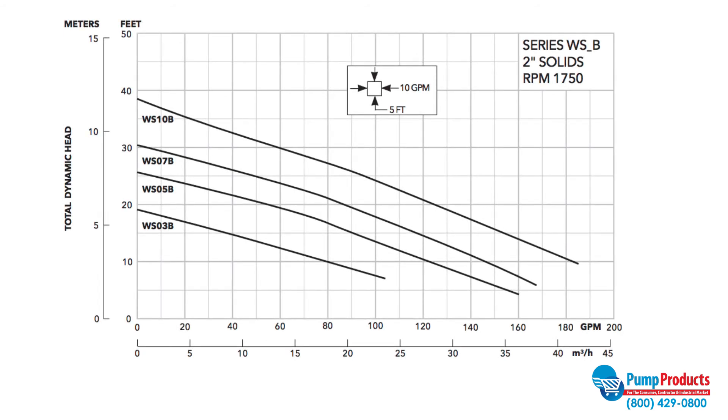For example, on this chart, the WS03B model will produce a head of 10 feet at 80 gallons per minute.